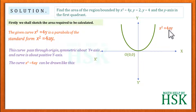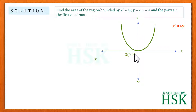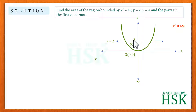This is the curve x² = 4y. I have to calculate the area bounded by the parabola, the lines y = 2, y = 4, and the y-axis in the first quadrant. The line y = 2 is parallel to the x-axis at distance 2 from the origin, intersecting the y-axis at point A with coordinates (0, 2).